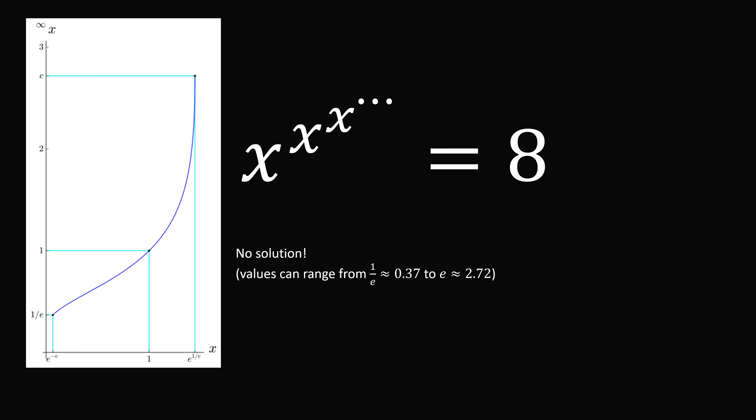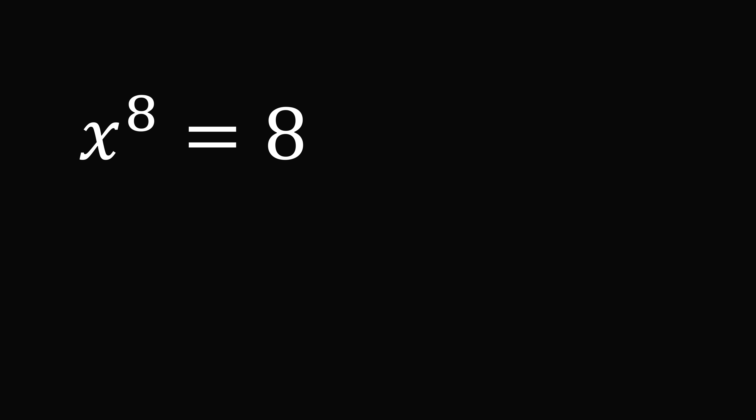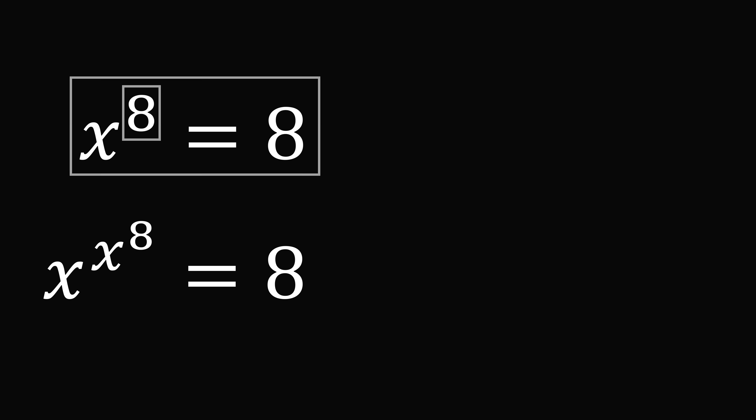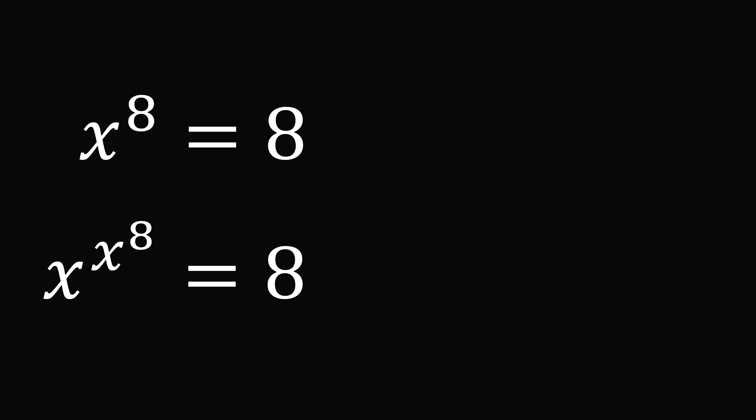Let's start over from first principles. Consider the equation x to the power of 8 equals 8. We have an 8 in the exponent, and we know the entire left-hand side equals 8. So we can substitute x to the power of 8 in for 8, and if we do that, we get our original equation: x to the power of x to the power of 8 equals 8. So if we can solve x to the power of 8 equals 8, we will have found a solution to x to the power of x to the power of 8 equals 8.